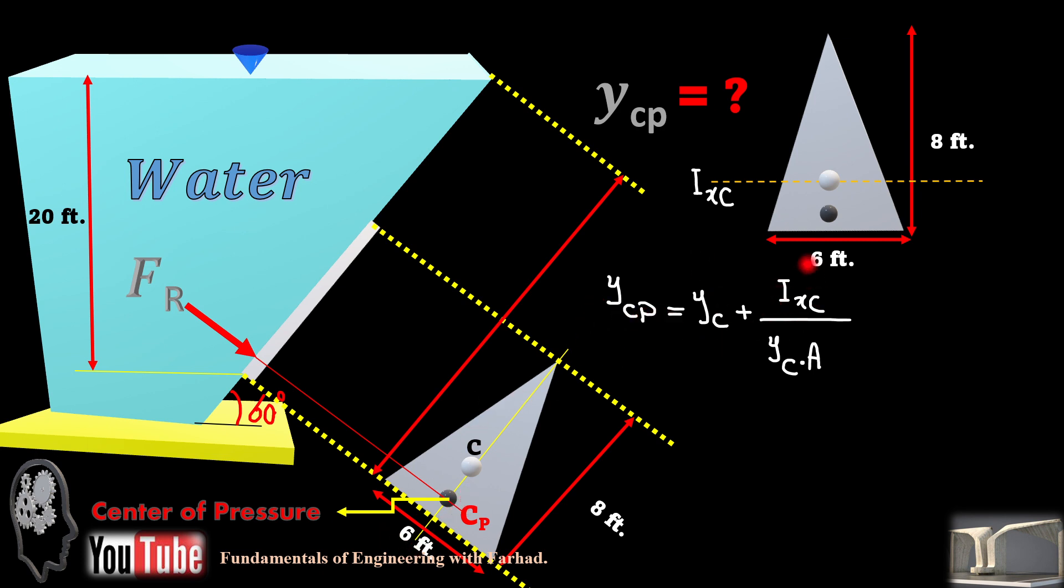So, if that's the case and we want to know what is y component of center of pressure, which is just a little below the centroid, that's yc plus ixc, moment of inertia at the x axis which moves from the centroid over y sub c times the area. We already calculated that y sub c is 20.43 in the previous part.